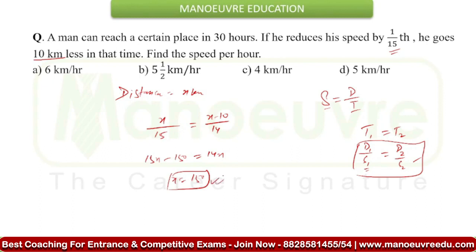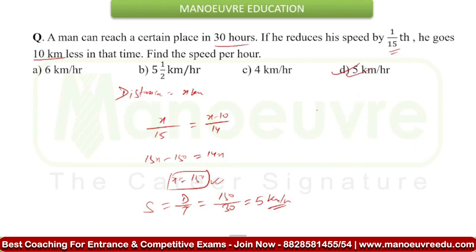So what is x? The distance covered by the man comes out to be 150 km. So what is speed? Speed is equal to distance upon time. Distance is 150 km, and the time taken is 30 hours. When you solve it, you get 5 km per hour as the speed of the man.